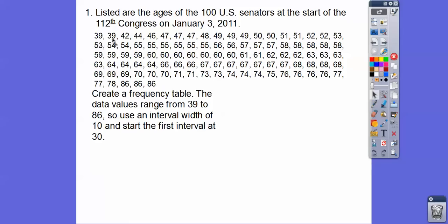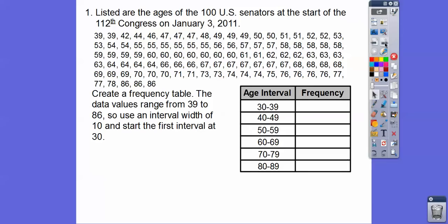So first we have to create a frequency table. The data values range from the smallest, and these are already in order, so good thing. So the smallest age is 39 and the oldest is 86. Yowie. I can't imagine an 86-year-old senator, but they're up there. So we'll use interval widths of 10. So we'll go and we'll start with the first interval being 30. So we'll go in the 30s, 40s, 50s, 60s, 70s, and 80s.